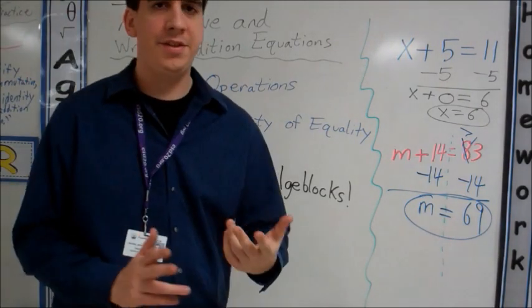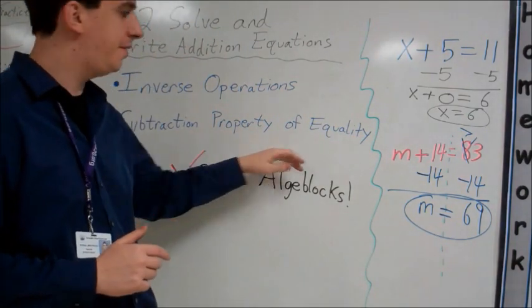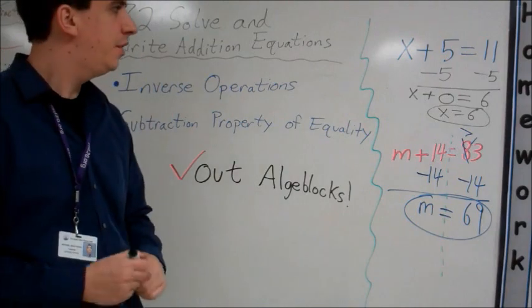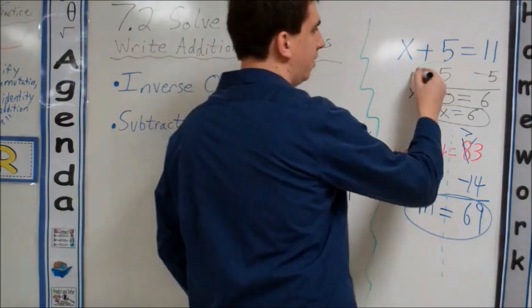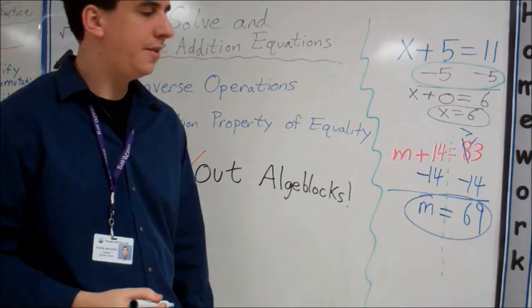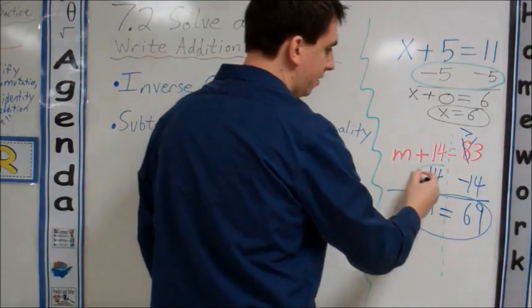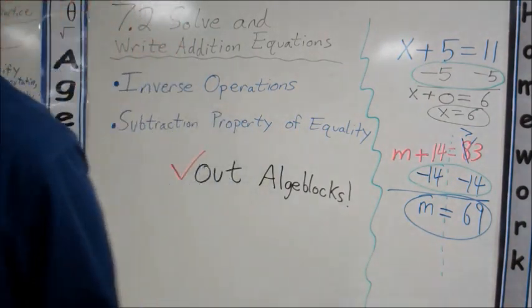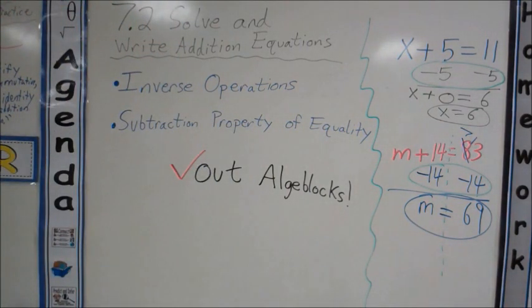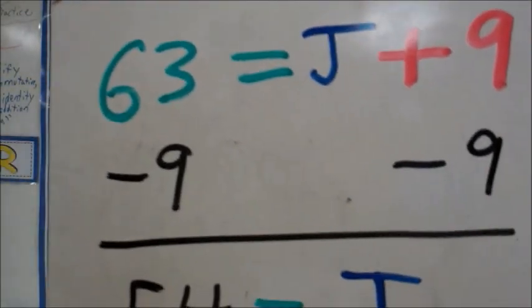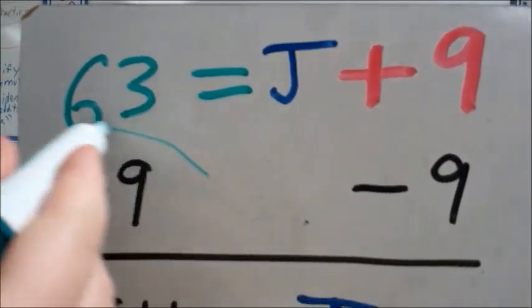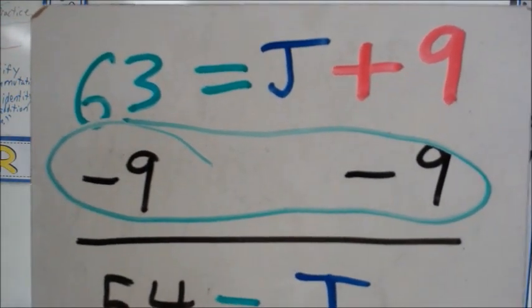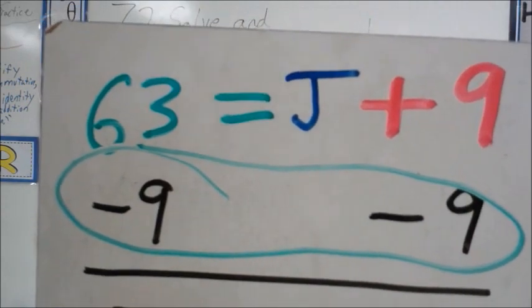What I want you to do at this point, you're probably saying, Mr. Brackovich, where was that subtraction property of equality? We did it, but I want you to define it in your own words. We did that over here when we did minus 5 and minus 5. We also did it over here when we did minus 14 and minus 14. Finally, we did it right here when we did minus 9 and minus 9. I want you to write the subtraction property of equality in your own words.